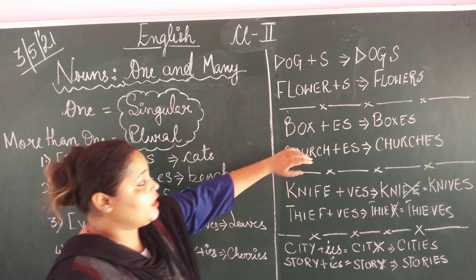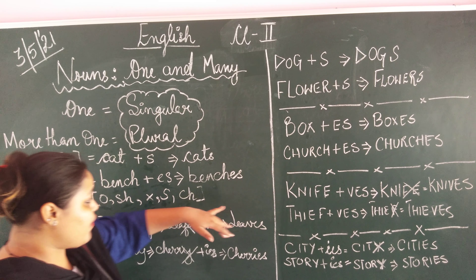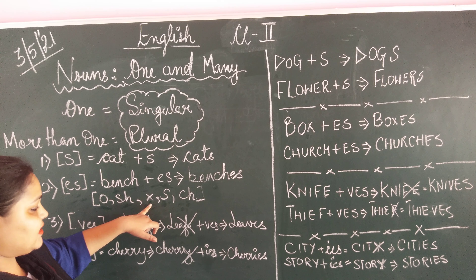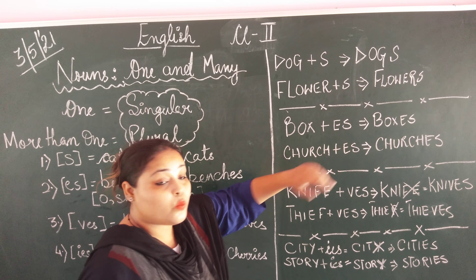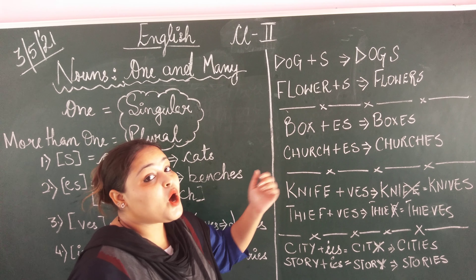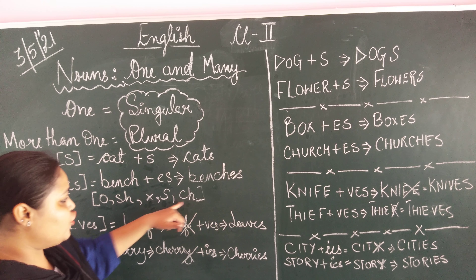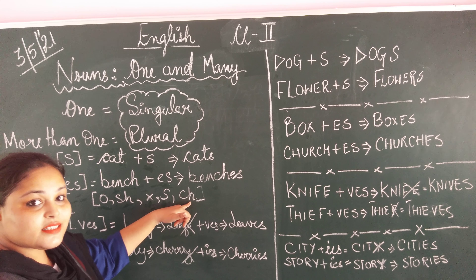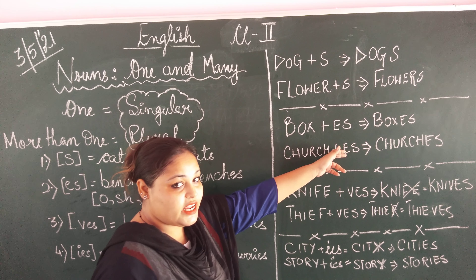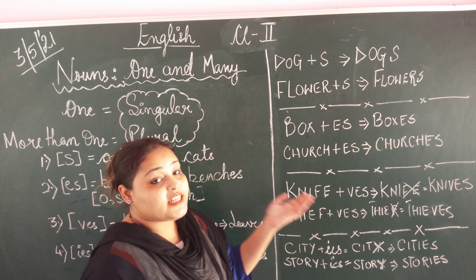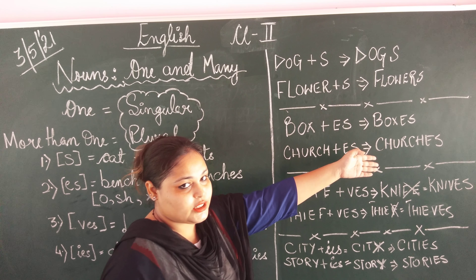See the examples. Box — what is the last alphabet? X. Since X is there, we add ES. It becomes 'boxes.' Then, church — the last letters are CH. Since CH is there, we add ES. That gives us the plural form: churches. One church, many churches.